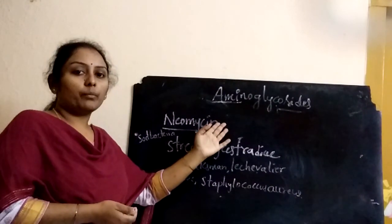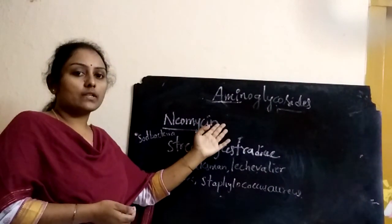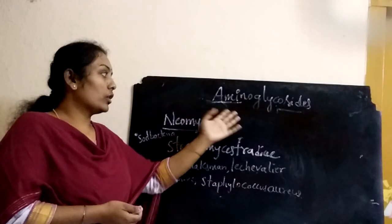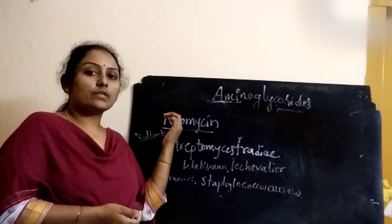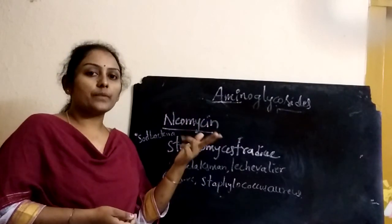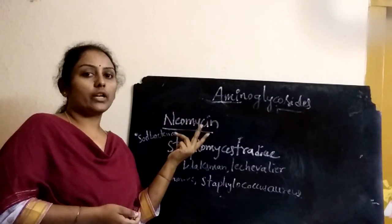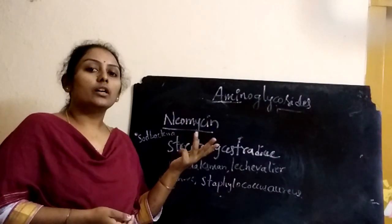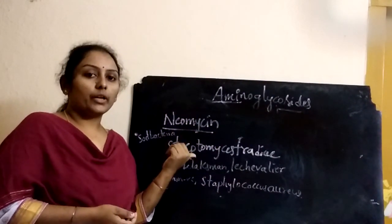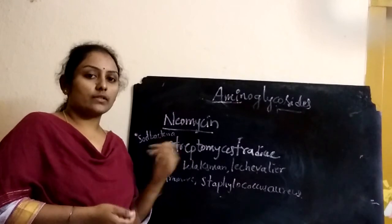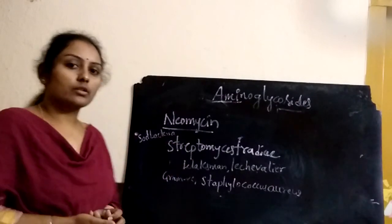In summary, aminoglycosides are classified into two types: systemic aminoglycosides and topical aminoglycosides. Thank you.